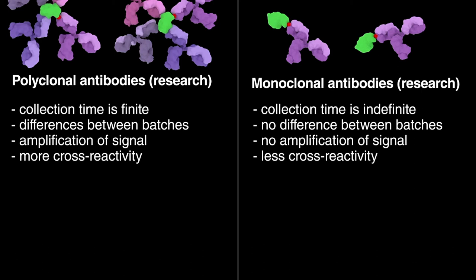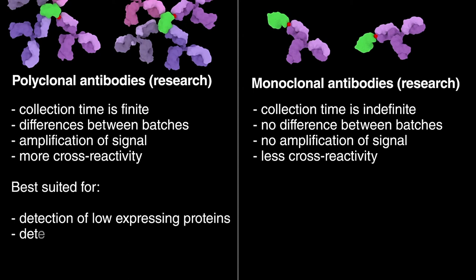As a result, polyclonals are better suited for detecting proteins that are expressed at low levels. They are also used to effectively detect different isoforms or versions of a protein or to screen for the presence of the protein of interest in other species.